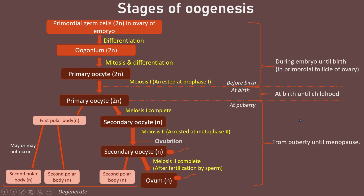From puberty until menopause, the primary oocyte develops into a secondary oocyte, and further into an ovum if fertilization occurs. Menopause is the stage where a woman will no longer have menstruation. At this point, she stops having a menstrual cycle, stops developing secondary oocytes from primary oocytes, and stops producing eggs altogether — because all the primary oocytes she was born with have been used up.